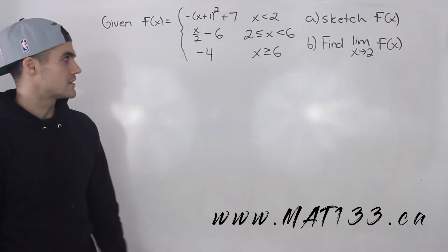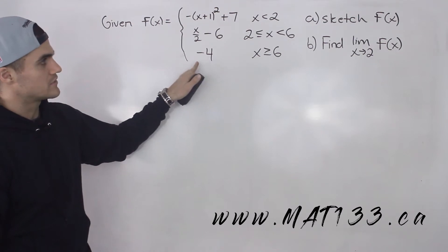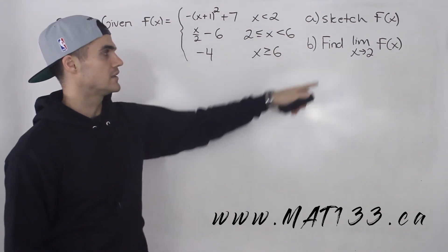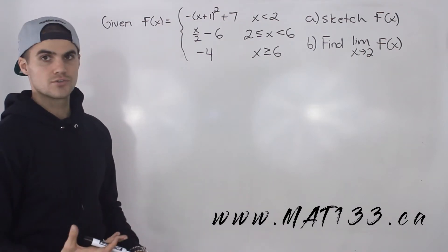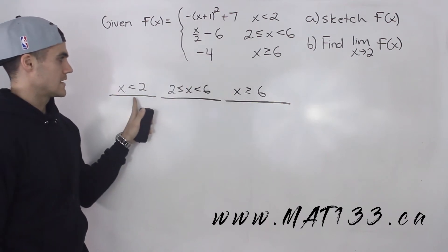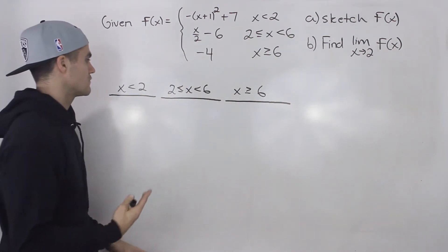What's up guys, Patrick here, moving on to the next question. We have this piecewise function here and we have to take this piecewise function, sketch it, and then we have to find the limit as x approaches two of it. Now because this piecewise function has three pieces to it, I split this up into three parts and I'm going to make three tables of values.